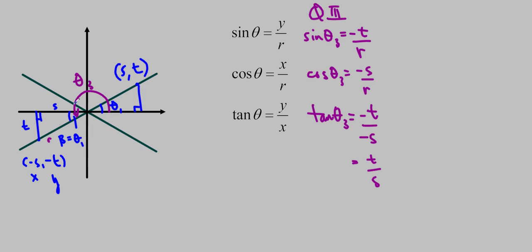So you can see that because both my s and my t are negative, it affects every single one of these ratios, except for that in tan, they cancel out and it becomes positive. So that's why tan is positive in quadrant 3, but the other two sine and cos are negative.